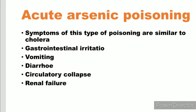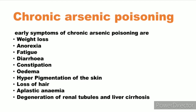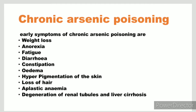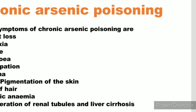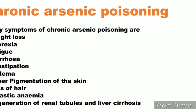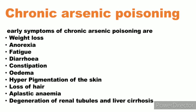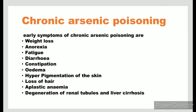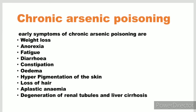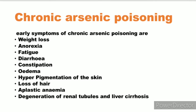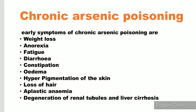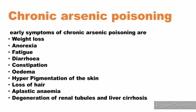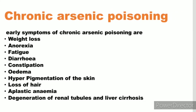Chronic arsenic poisoning symptoms include weight loss, anorexia, fatigue, diarrhea, constipation, edema, hyperpigmentation of the skin, loss of hair, aplastic anemia, and degeneration of the renal tubules. Liver cirrhosis may also occur.